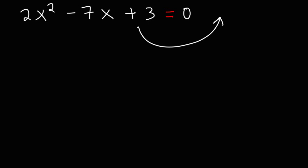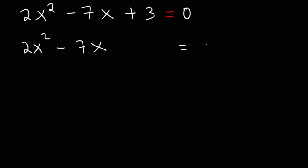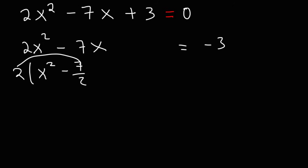First, as always, we're going to move the 3 from the left side to the right side, so we're going to have 2x squared minus 7x equals negative 3. Now, we shouldn't complete the square yet — we need to deal with this leading coefficient first. So what we need to do is factor out the 2. Factoring out 2 from 2x squared gives us x squared. For the middle term, you just divide it by 2, so this becomes negative 7 over 2, because 2 times negative 7 over 2 is negative 7.